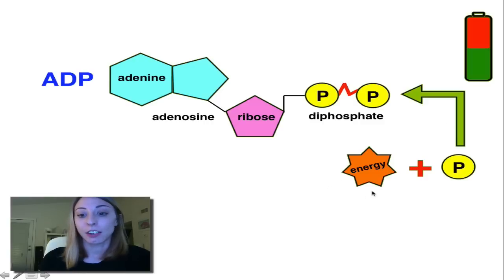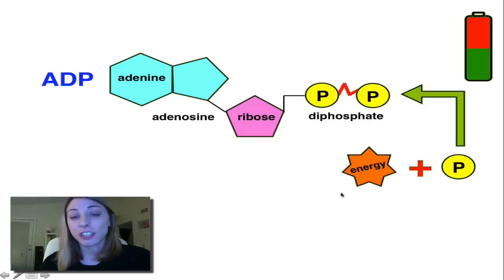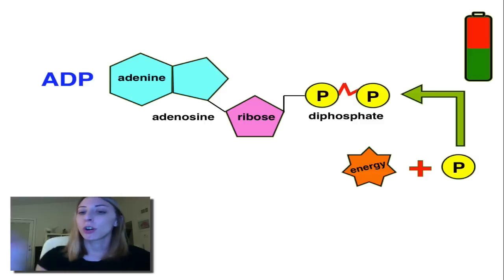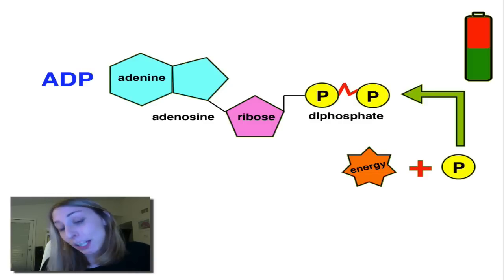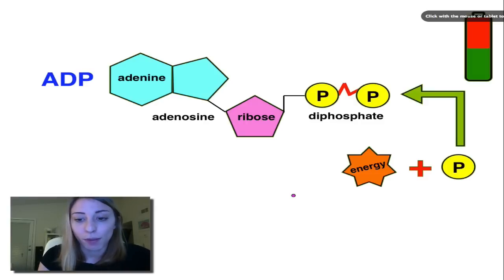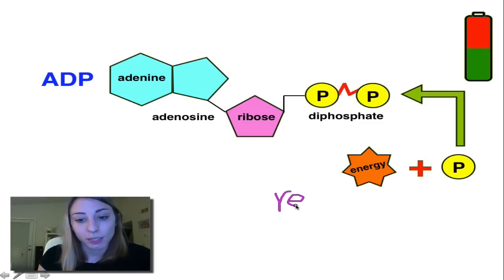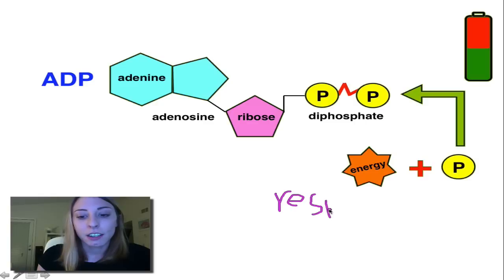So if we use energy from our food — that's where this energy comes from — it actually comes from cellular respiration. We're going to learn about that later. Cellular respiration and the energy we get from breaking down food can be used to add a phosphate back on ADP so we get our fully charged battery.